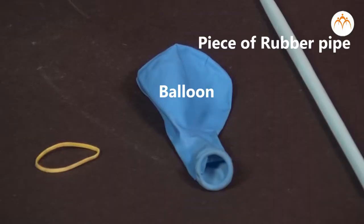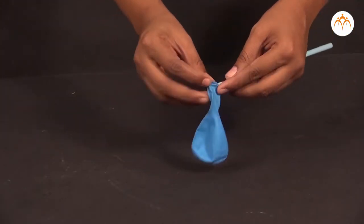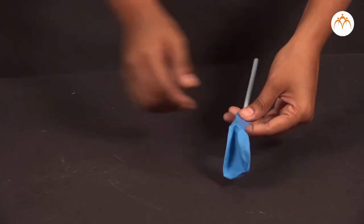Part three. Let us perform the third experiment. The apparatus required for the experiment is a balloon, a piece of rubber pipe having a diameter of 5 mm to 1 cm. To start with, let us tie a balloon tightly to a lightweight rubber pipe.